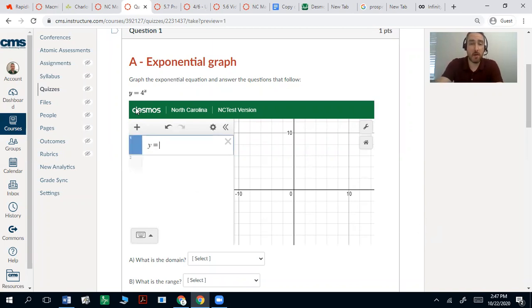So the first part wants you to graph y equals 4 to the x power. You can see it's an exponential growth function—it gets bigger as it goes to the right.